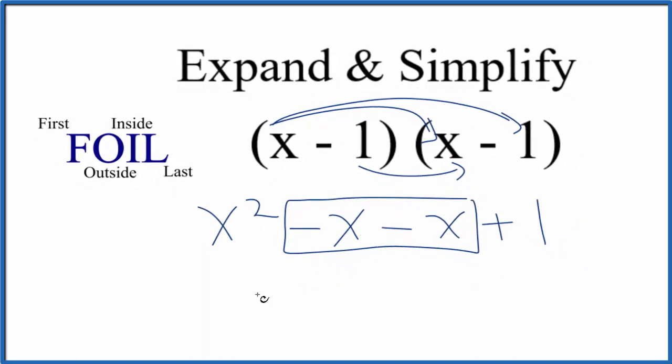So since these two terms here, they're similar, we can combine those. So we'll get x squared minus 2x plus 1.